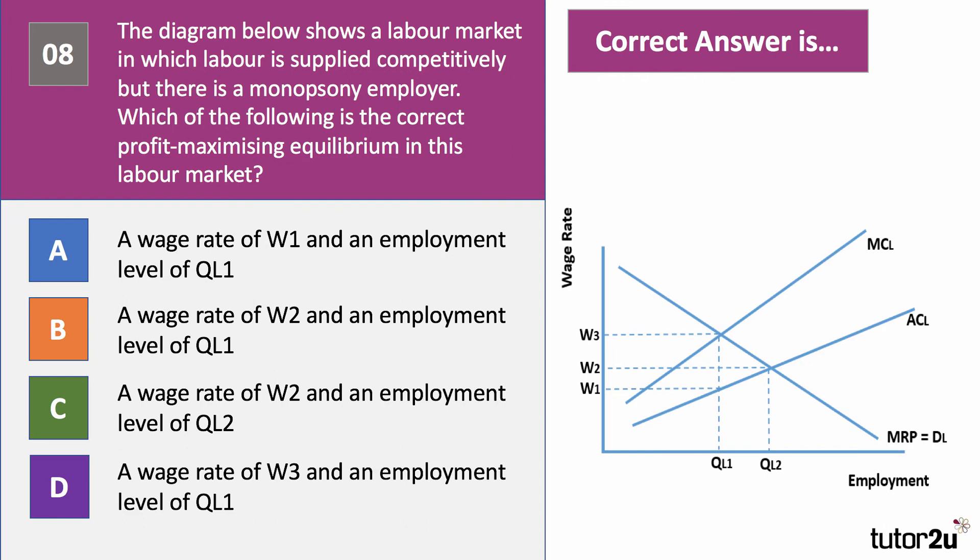Three questions to go — a couple of tricky theory questions coming up. The diagram shows a labour market in which labour is supplied competitively but there is a monopsony employer. Which of the following — A, B, C, or D — is the correct profit-maximising equilibrium in this labour market? Press the pause button and have a go at this tricky question.